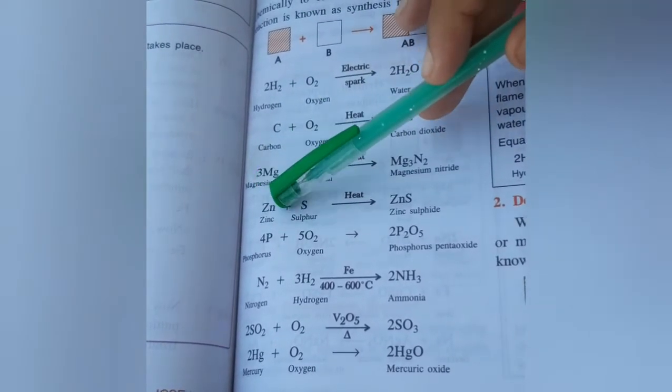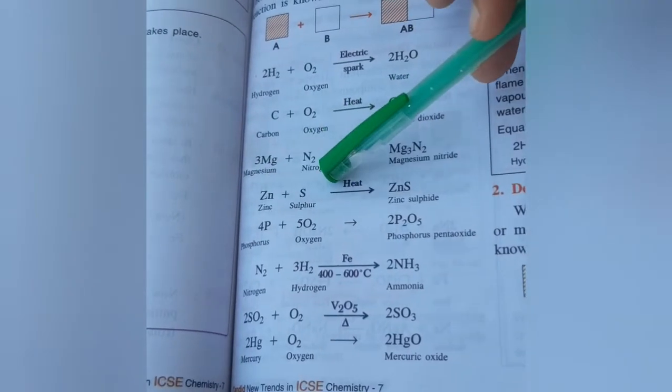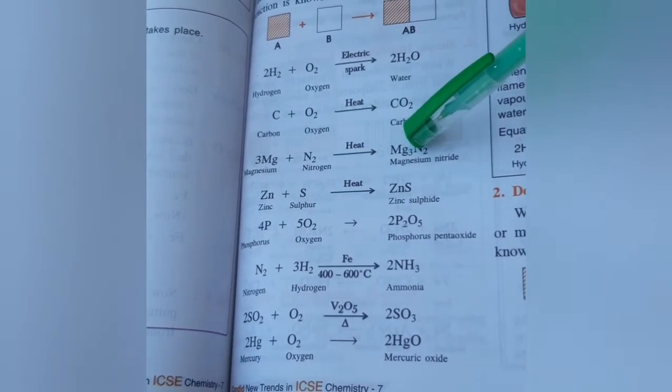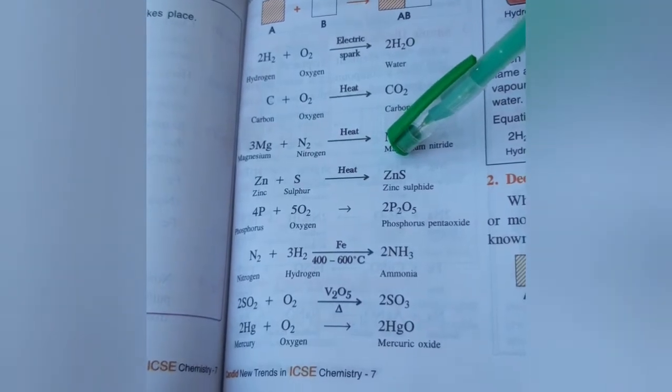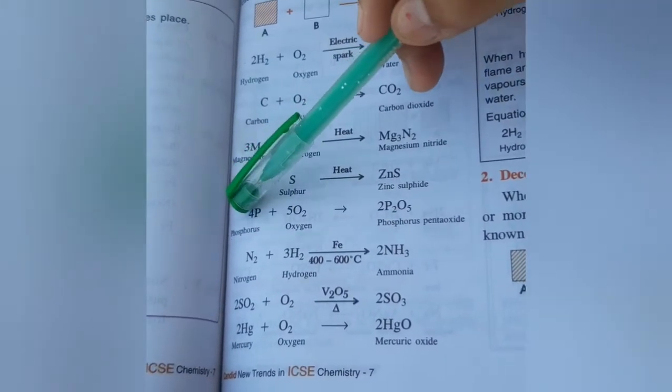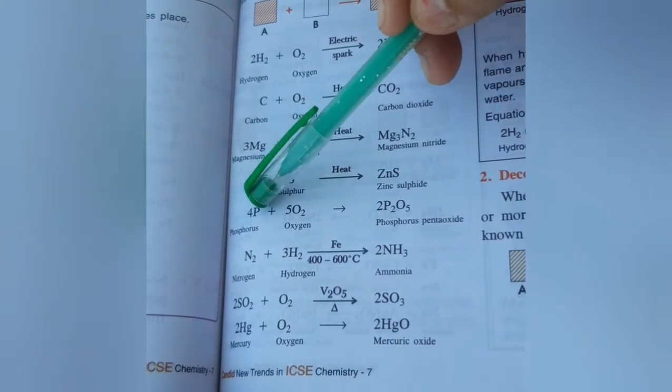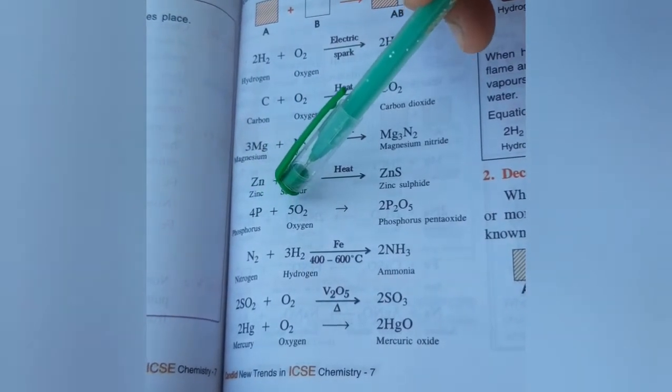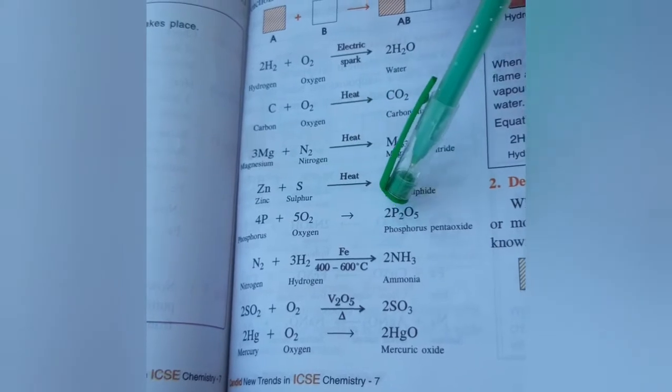Zinc plus sulfur on heat equals zinc sulfide ZnS. P4 phosphorus plus 5O2 equals 2P2O5.